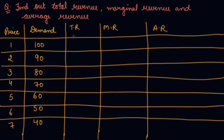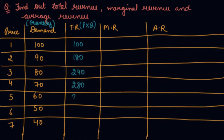This is the next question where we have to find total revenue, marginal revenue, and average revenue. You are given the price and the demand — demand means quantity. If the demand is given, you will supply those quantities. Total revenue is price into quantity, giving values of 100, 180, 240, 280, 300, 300, 280.